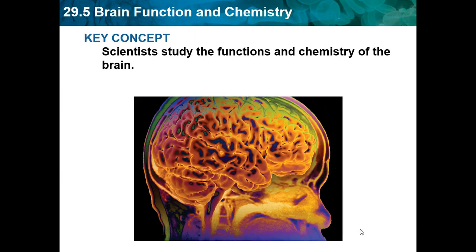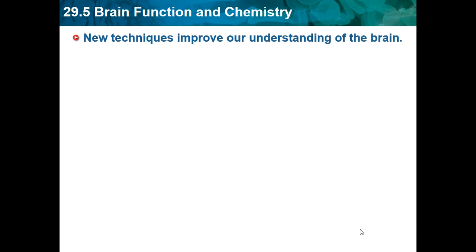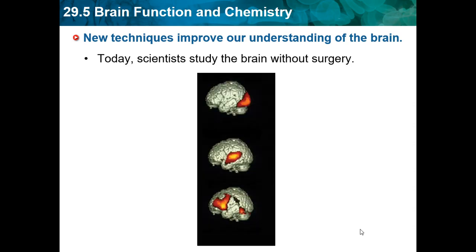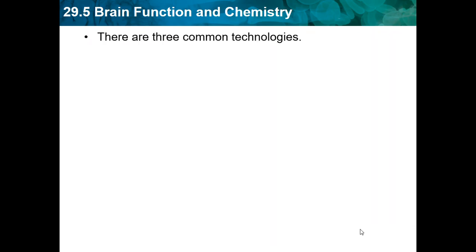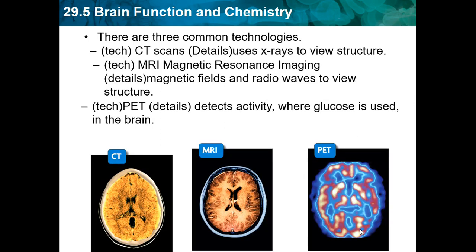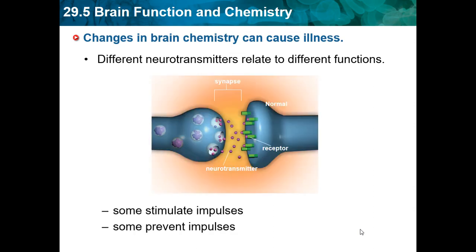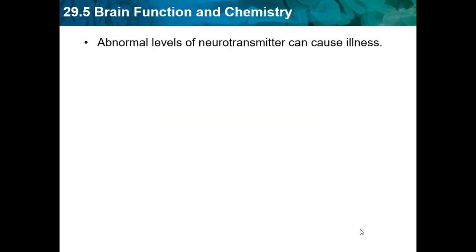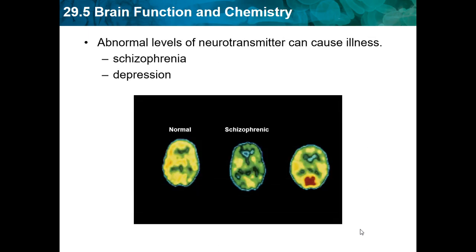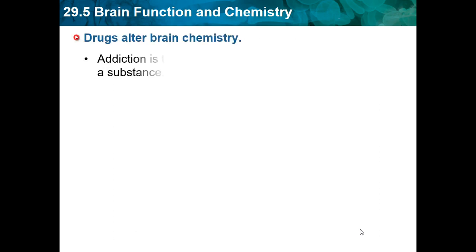Section 29.5 covers brain functions and chemistry. Scientists study the functions and chemistry of the brain using new techniques that allow study without surgery. Abnormal levels of neurotransmitters can cause illnesses such as schizophrenia and depression. Drugs also alter brain chemistry. Addiction is the physical, physiological need for a substance — the brain and body get so used to having the chemical present that they rely on it.